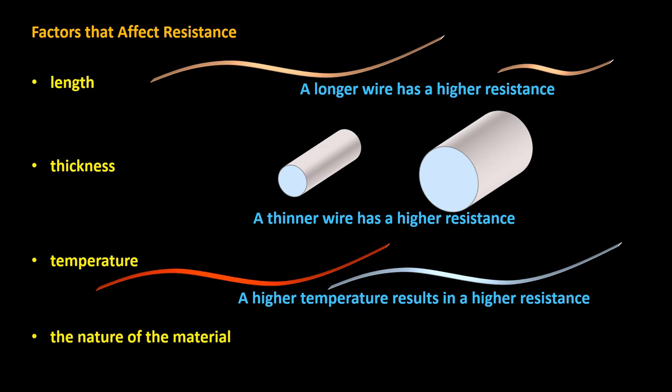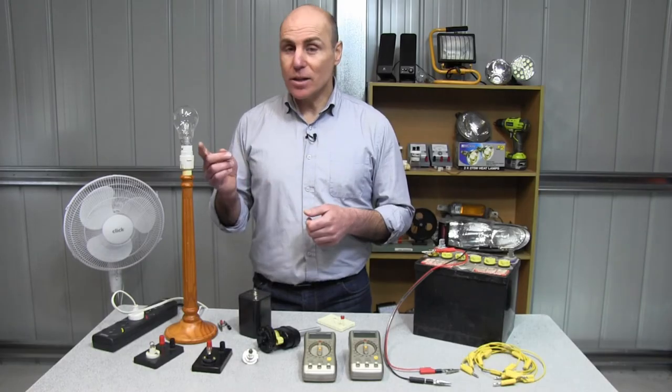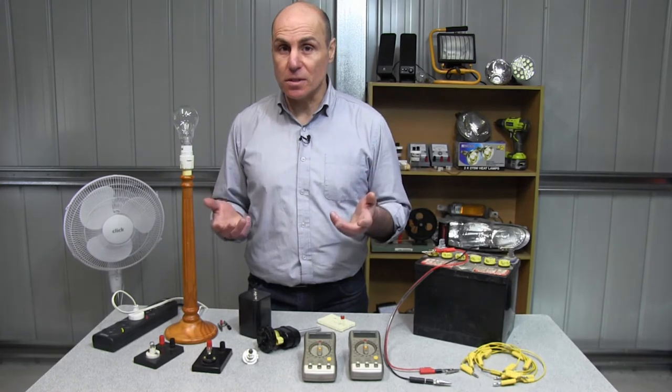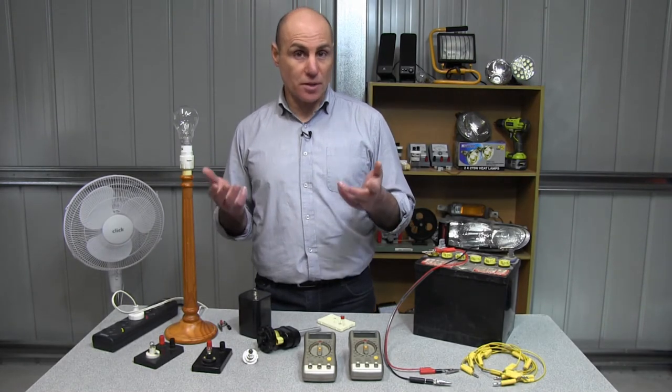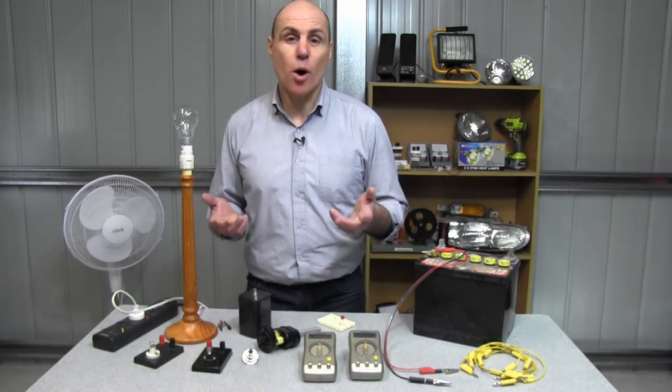The nature of the material is important, because electrons can flow through some materials more easily than they can through other materials. Light globes and all electrical devices are designed with different resistances, depending on the voltage that they'll be connected to, and on the amount of current that they need to operate correctly.